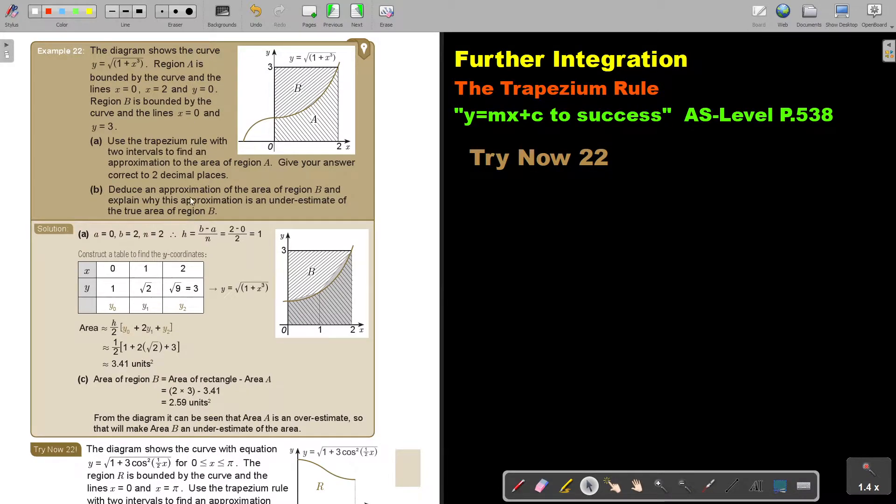Let's look at another example. The diagram shows the curve y is equal to square root 1 plus x to the power 3. The region A is bounded by the curve and the lines x equals 0, x equals 2 and y equals 0. Region B is bounded by the curve and the lines x equals 0 and y is equal to 3. Now use the trapezium rule with two intervals to find an approximation to the area of region A. Give your answer correct to two decimal places.